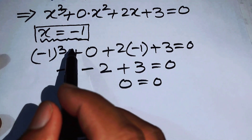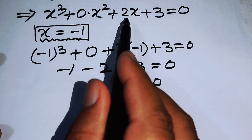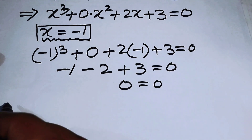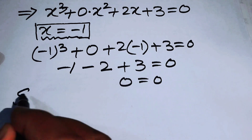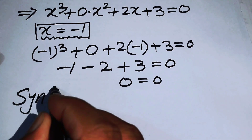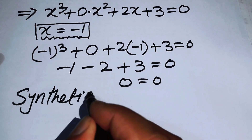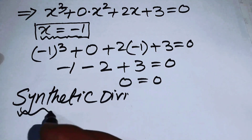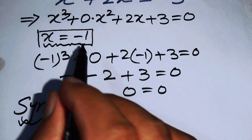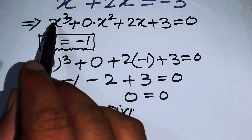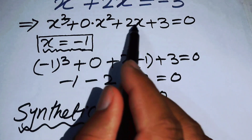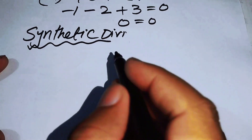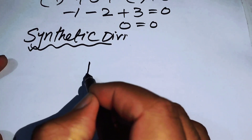So x equals minus 1 is a root of this cubic equation. Now we apply synthetic division. According to synthetic division, we first choose the coefficients of all the terms.